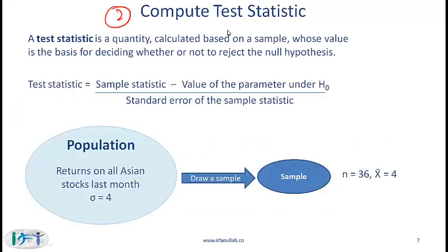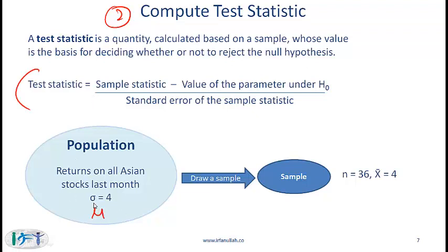Item 2: compute the test statistic. A test statistic is a quantity calculated based on a sample whose value is the basis for deciding whether or not to reject the null hypothesis. This is the formula for calculating the test statistic where you are interested in the mean of the population.